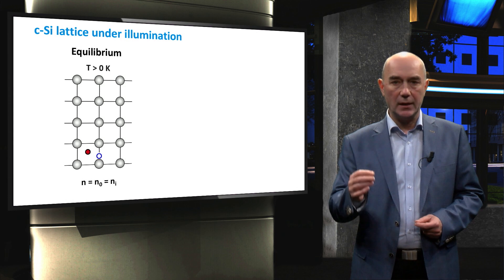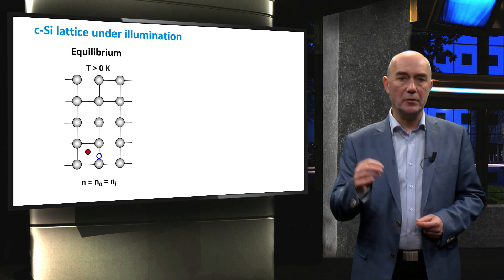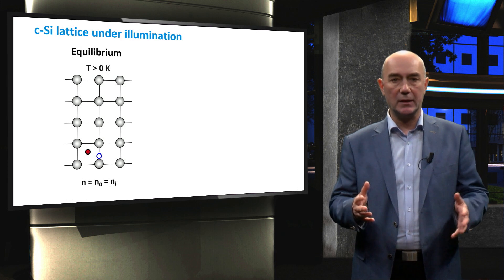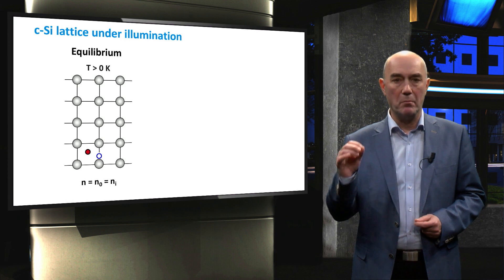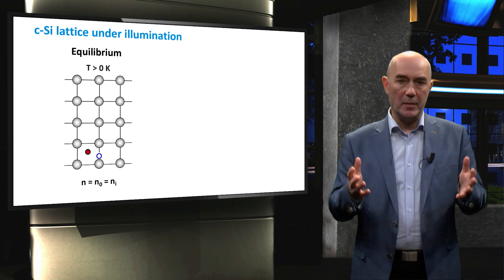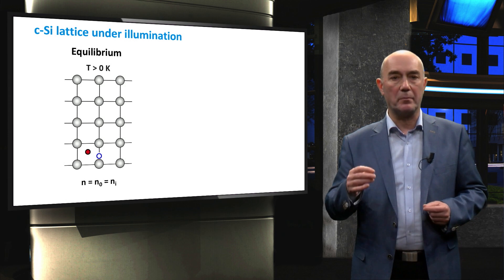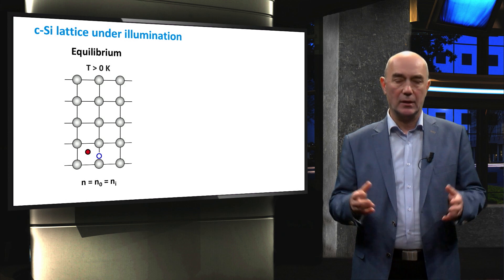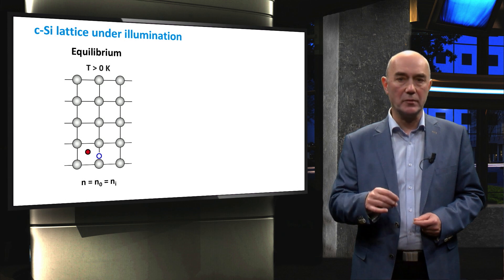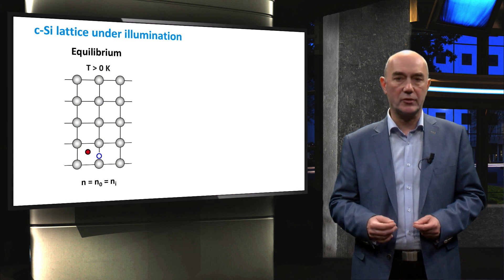Let's start by looking at an intrinsic semiconductor. Here you see an intrinsic crystalline silicon at thermal equilibrium using bonding model representation. At a temperature above zero Kelvin, mobile electrons and holes are present in the material.